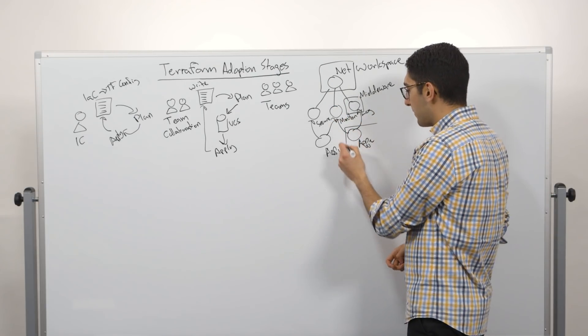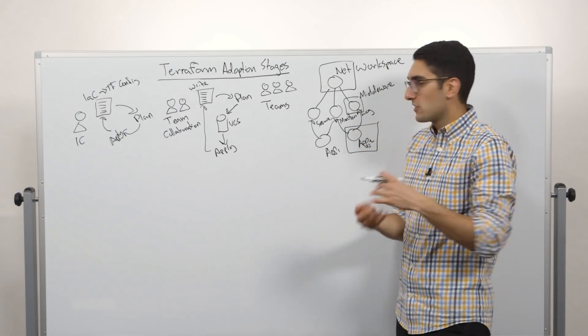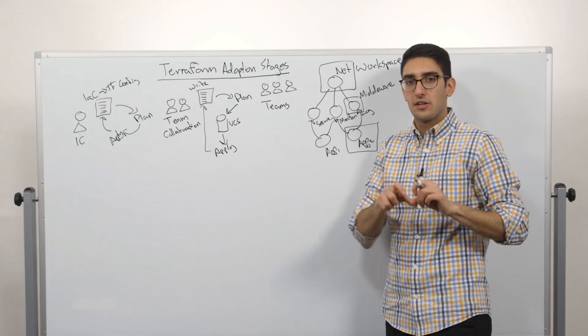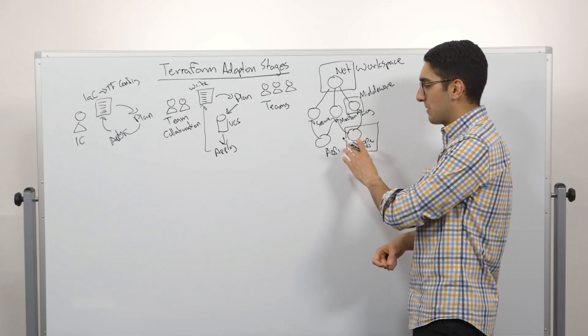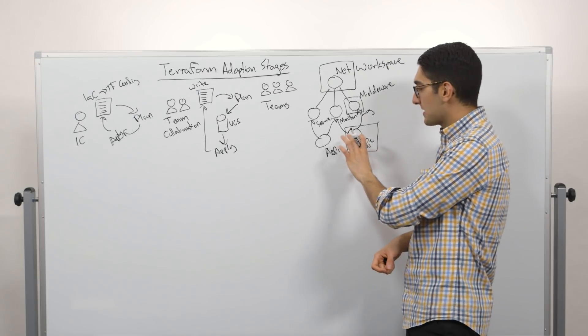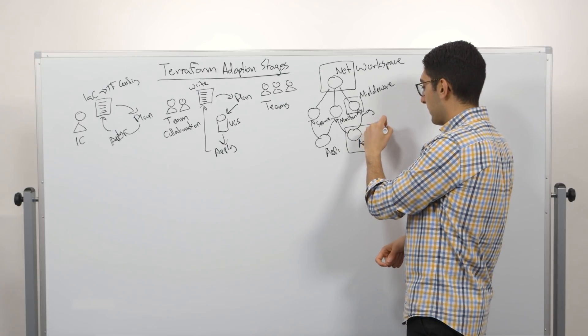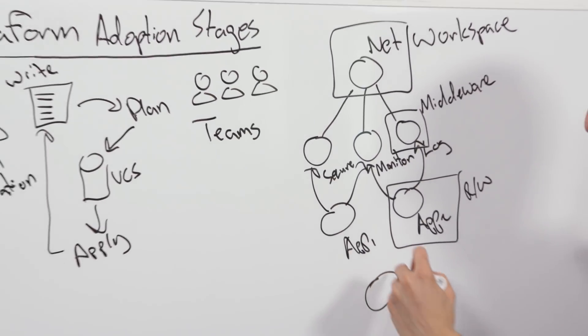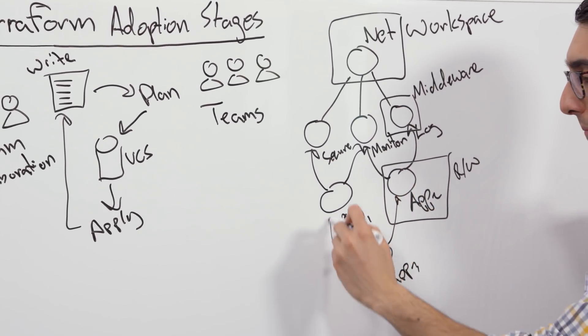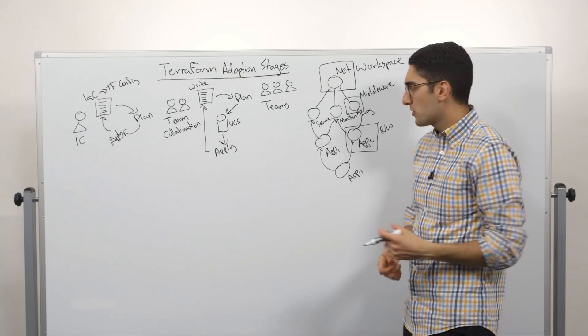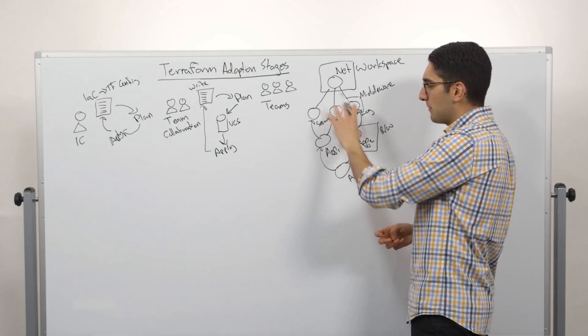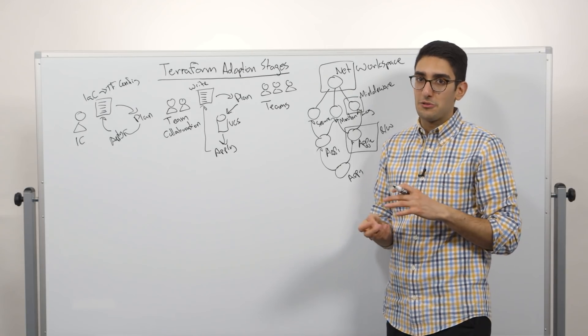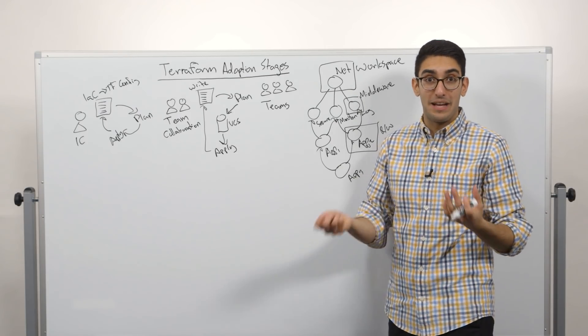When we get to the independent teams, now as an application team, I can consume all of these pieces without having to talk to them. I can just consume the network, consume logging, consume monitoring, build and deploy and manage my application. I might say my team maintains both the ability to read and write, but I have a downstream application, app three, that might want to consume me and again build out the infrastructure this way. As we go to multiple teams, it's really about how do we allow the teams to work independently of each other, but doing that safely without exposing ourselves to everyone being able to make any sort of change.